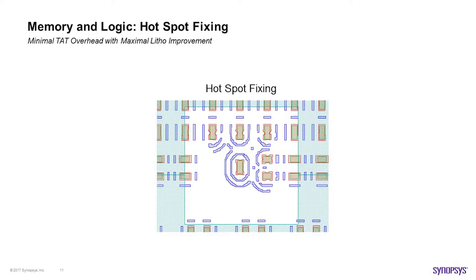The next use case is hotspot fixing, which can be applied to both memory and logic. We have an example here of a stretched contact in the middle that is a little bit isolated and weaker, which needs some extra assist feature handling. We show how we can blend the aggressive ILT solution in with the traditional OPC and RBF solution. This is very useful because if you only have a few hotspots, you don't need to worry as much about total impact to throughput or run time — it will take much less time to run these critical areas versus running ILT everywhere.